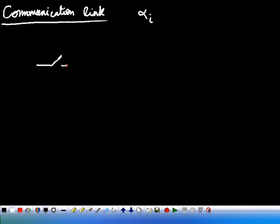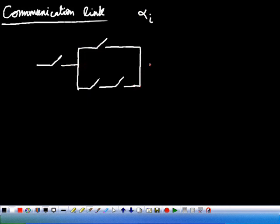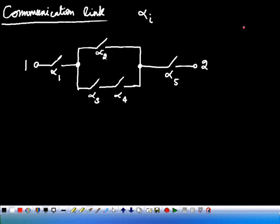A communication link has the switches alpha i as shown in figure. All the switches can be closed or open independently. The probability of closing a switch is equivalent to P.